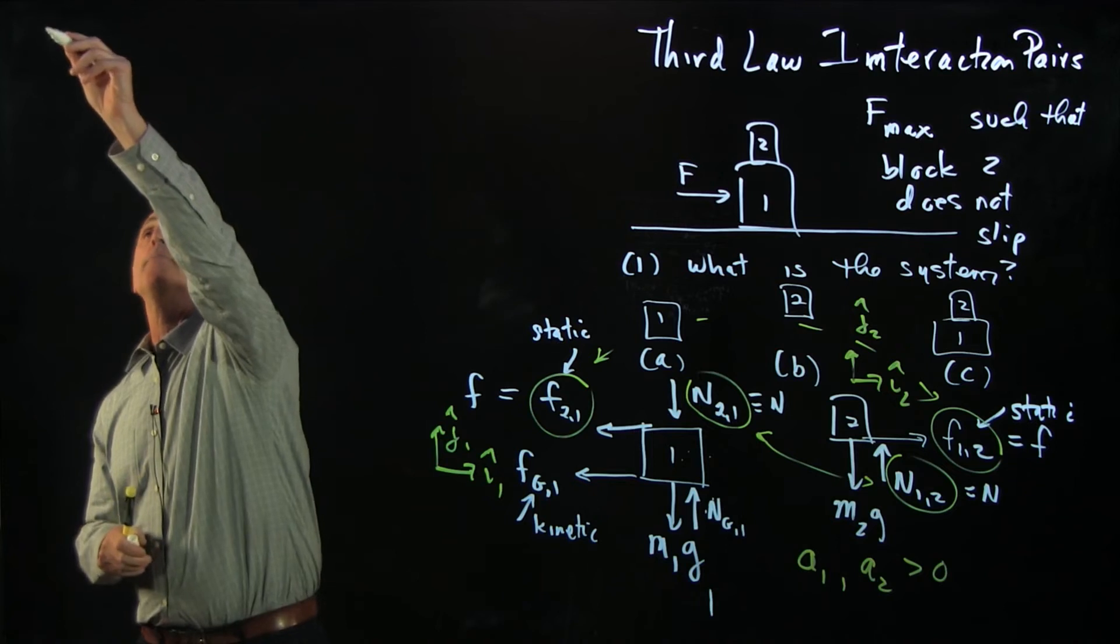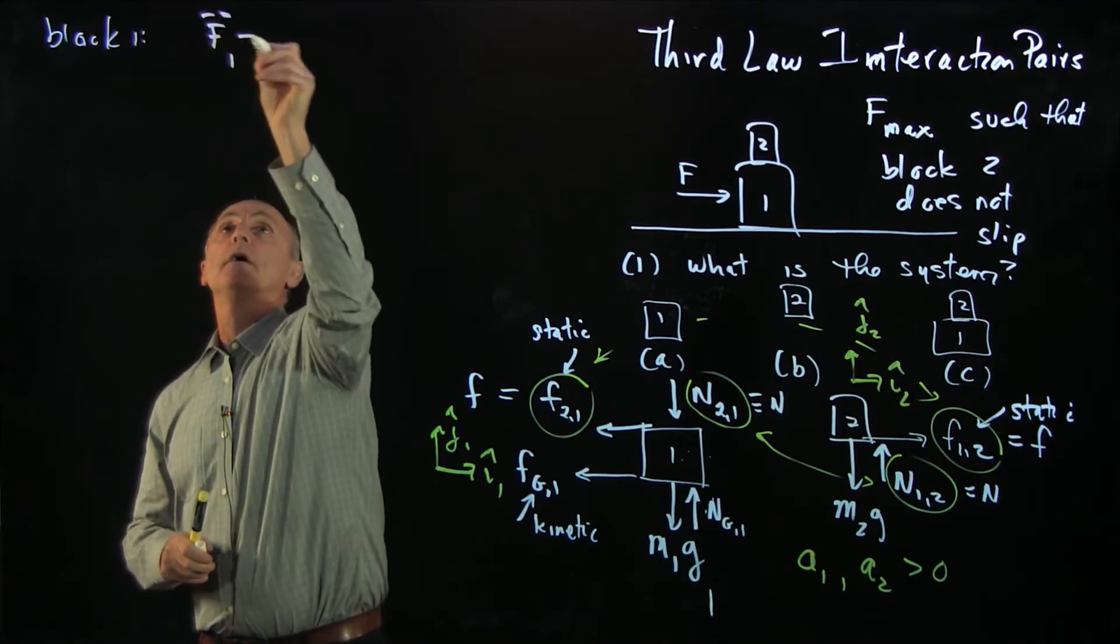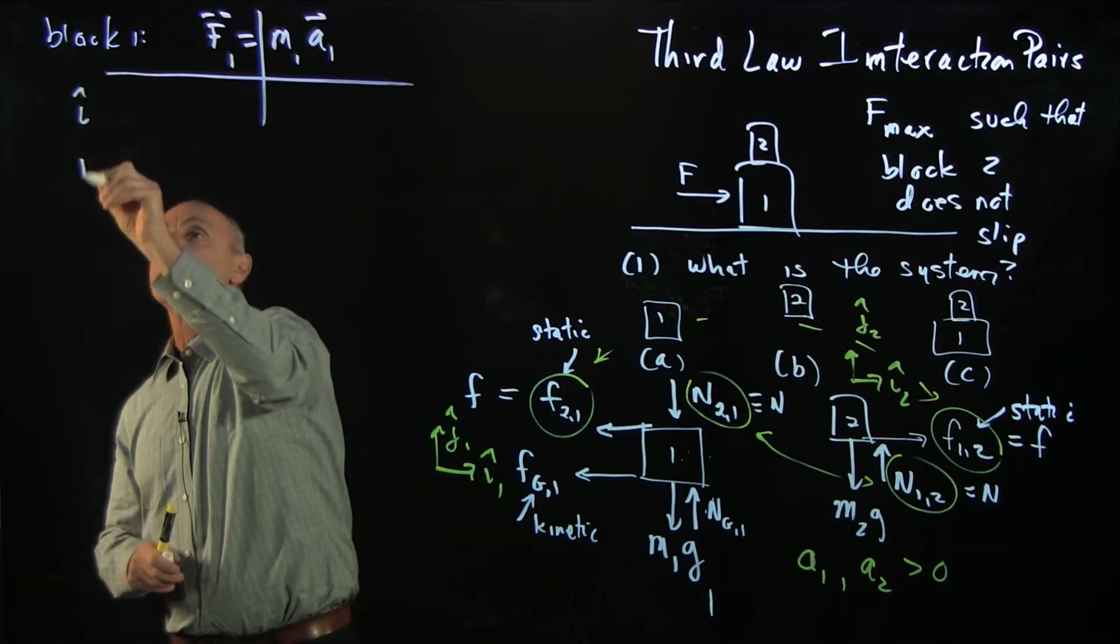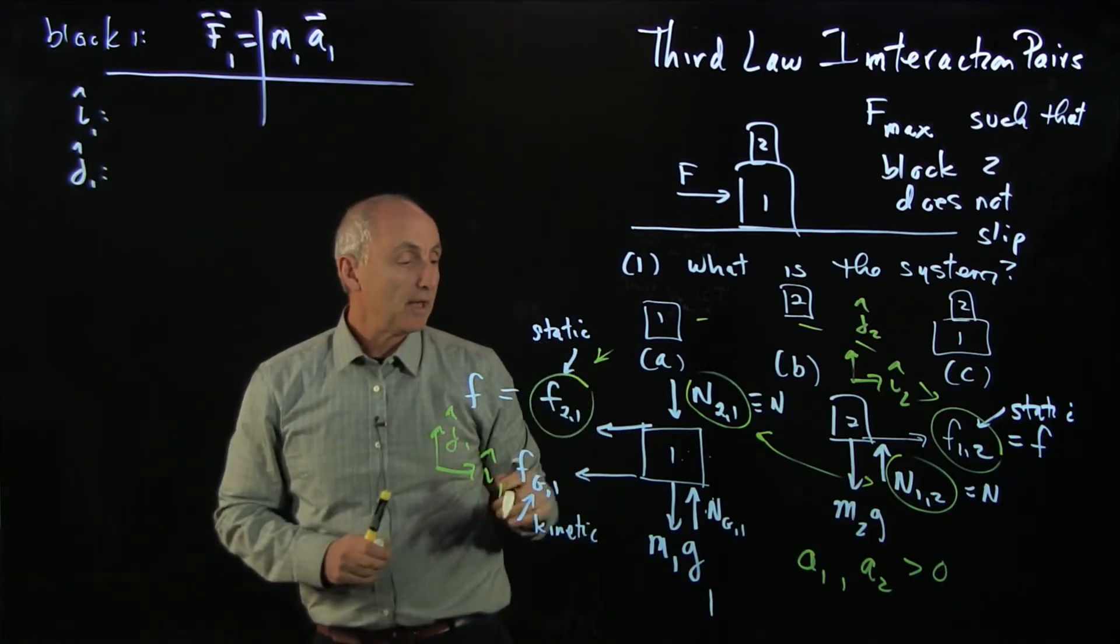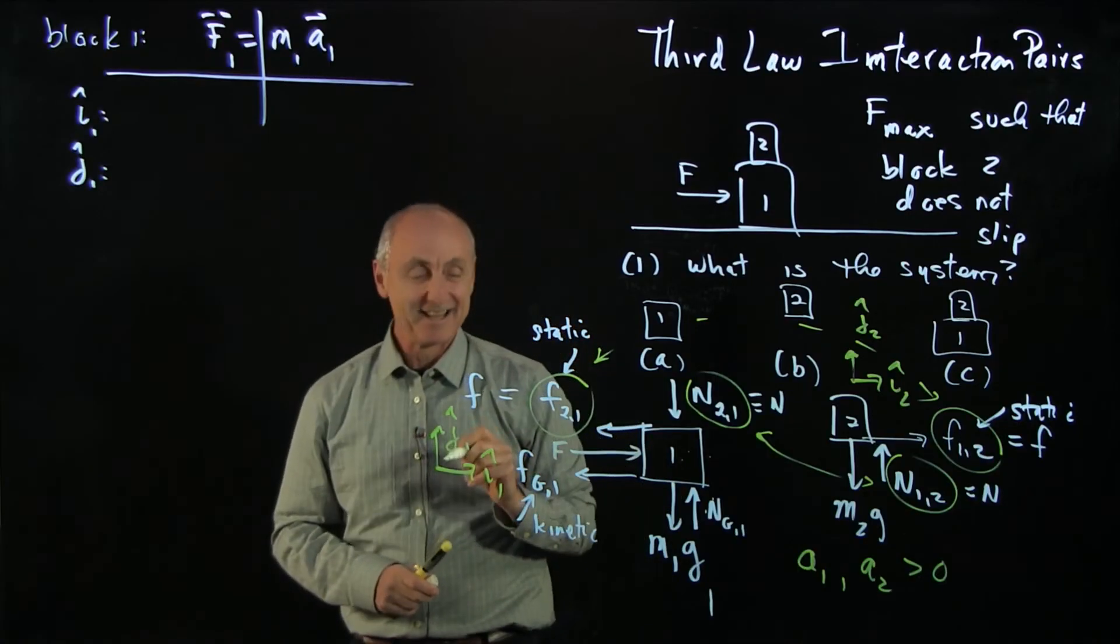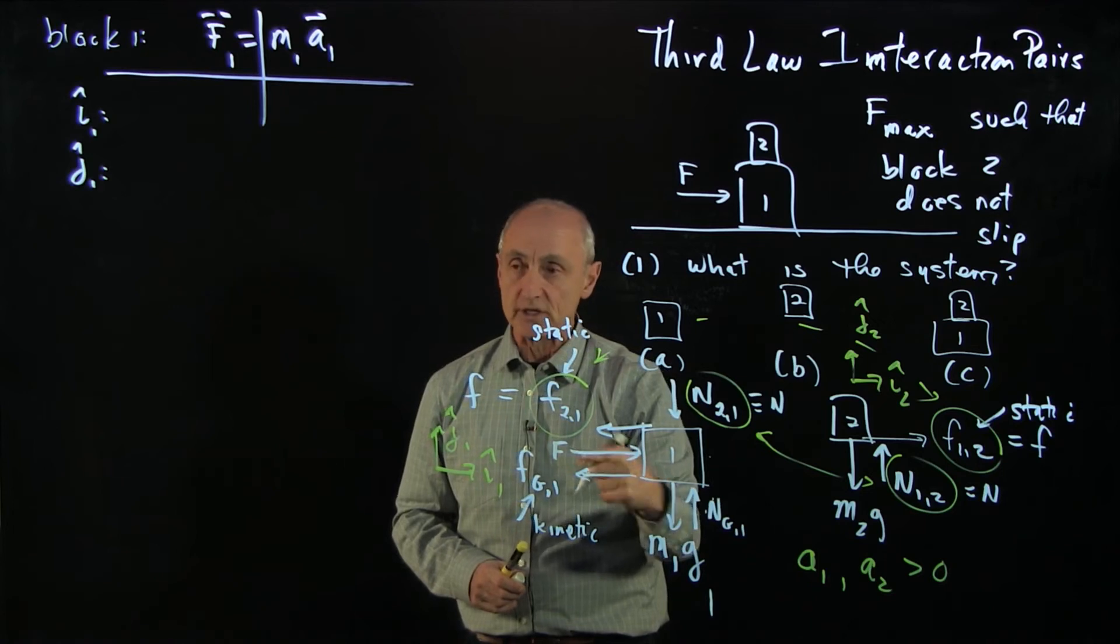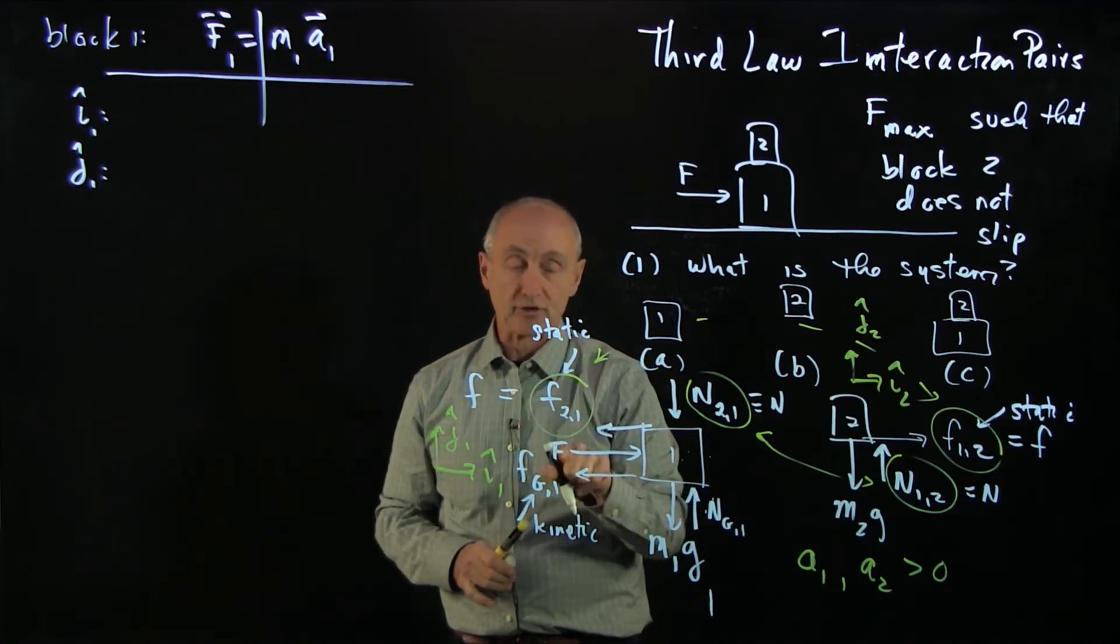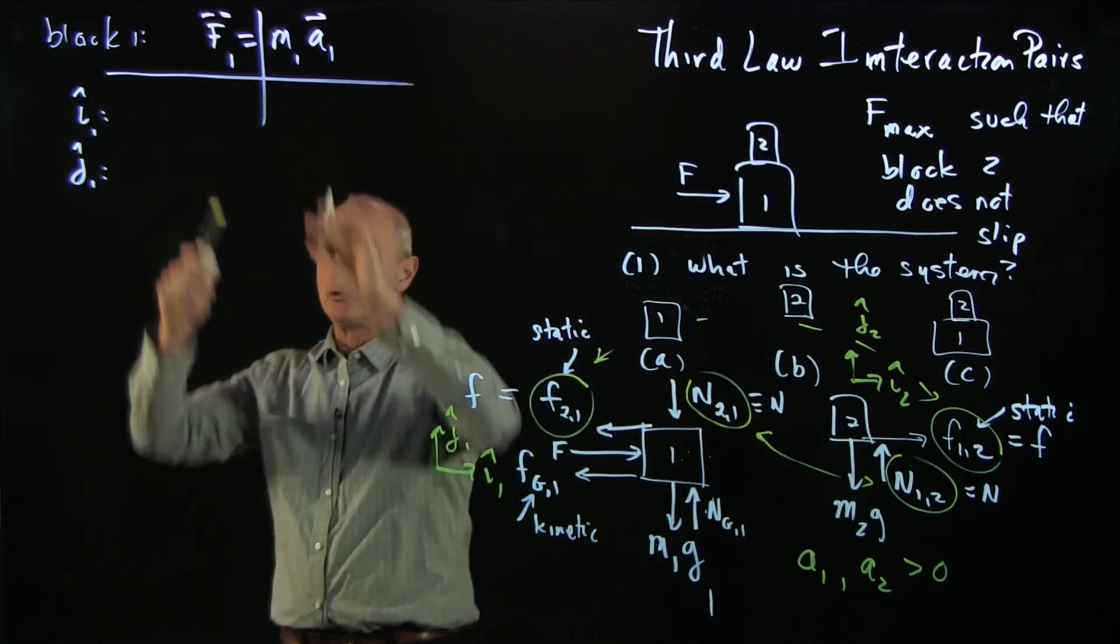And now I can write down on block one, I can write down f1 equals m1 a1. And because we have two different directions, I'll separate out. I like to call this my scorecard. And now I look at the forces. Oh, I missed the pushing force. But that's an interesting exercise. When I looked at this diagram, I saw I had two forces going this way. I had no force acting that way. I went back, I checked my free body diagram, and recognized that I forgot to put f in there. Always a good exercise to double check your free body diagrams before you apply Newton's laws.